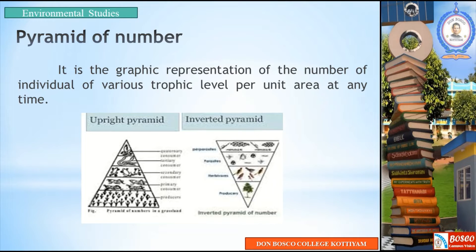The inverted pyramid of numbers occurs when we consider a single tree in a food chain. In a single tree there are birds, and we represent the number of pyramids in an opposite direction. The pyramid of numbers represents the number of organisms at trophic levels graphically — two types: upright pyramid and inverted pyramid.